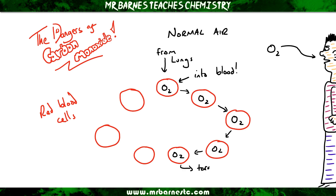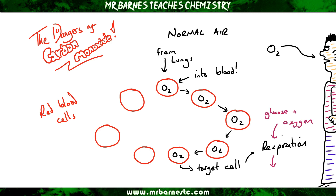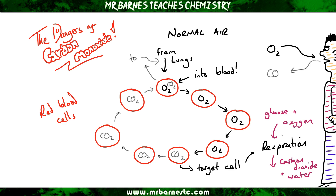That could be in the leg, it could be in the liver, wherever. Respiration occurs where it takes glucose and oxygen from the blood and produces carbon dioxide, water, and energy — the energy that all the cells need to live. That carbon dioxide is then put back into the blood and transported back up to the lungs and we breathe it out.